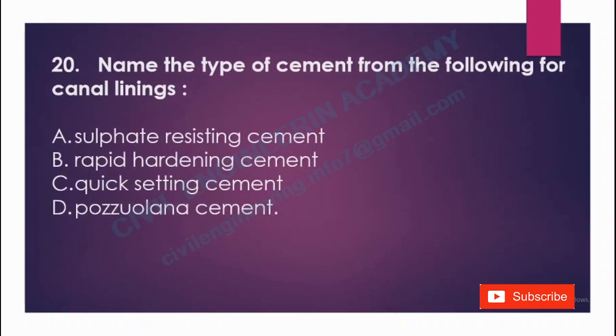Name the type of cement used for canal lining: A) sulfate resisting cement, B) rapid hardening cement, C) quick setting cement, D) pozzolana cement. The answer is sulfate resisting cement.